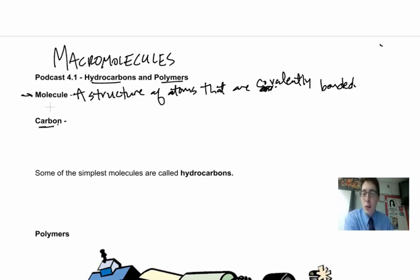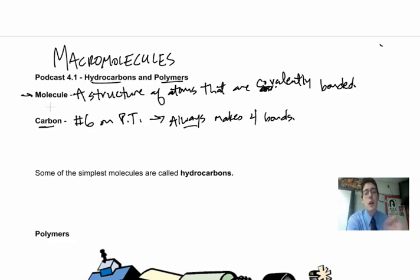All of these macromolecules are based on carbon. Carbon is a very important atom in biology. Carbon, first of all, it is number six on the periodic table, and it always makes four bonds. That's extremely important because when carbon makes four covalent bonds, we can get a multitude of different structures that will do a lot of different things in the cell.